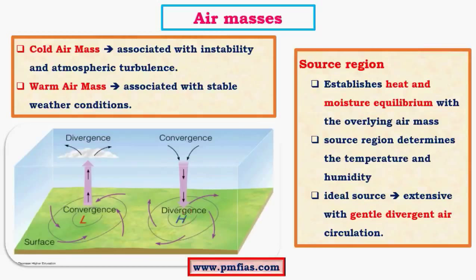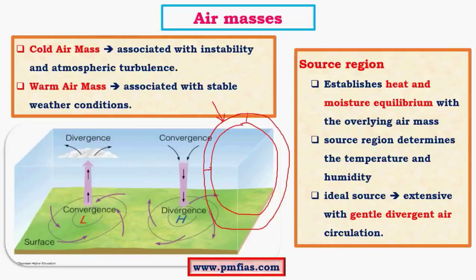Regions where there is divergence of air usually aid the formation of airmasses. Airmasses are not just a small parcel of air — they are very huge parcels of air extending from the bottom layers of the troposphere to the top layers. We know that the troposphere has a thickness of 15 to 16 km at the equator whereas at the poles it is only about 7 to 8 km. So airmasses have a vertical extent of 7 to 8 km in polar regions and 15 to 17 km in tropical regions.